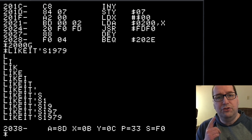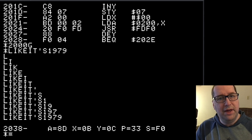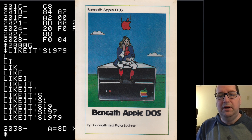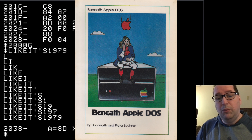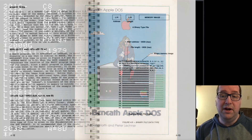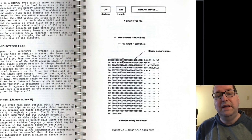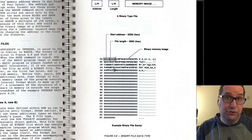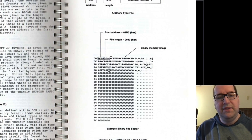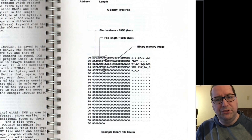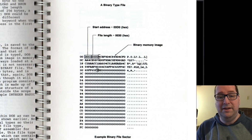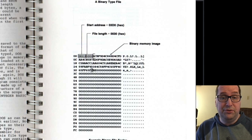But how did DOS know to load this program at memory location hex 2000? To answer this question, I referred to what many consider the Bible of Apple II DOS — a book called Beneath Apple DOS. What we learned is that for all binary files, the first two bytes indicate the address it will be loaded to. The next two bytes indicate the length, and then the rest of the file is the actual data. So the location and length metadata is literally just part of the file format.